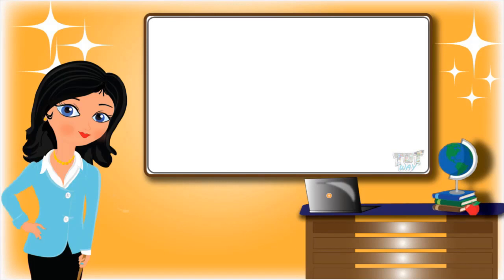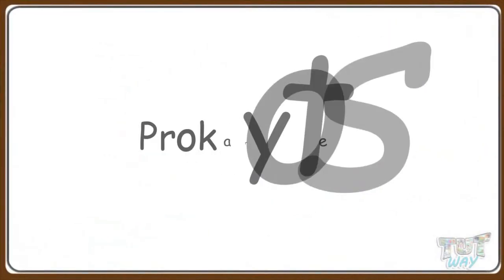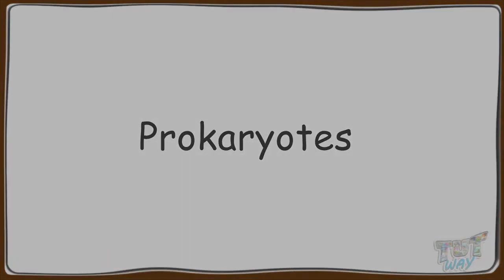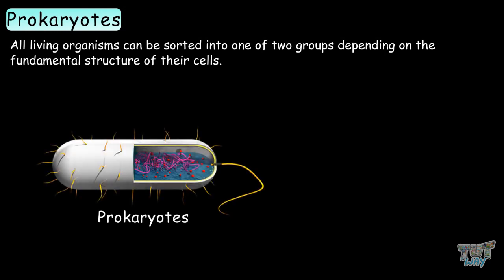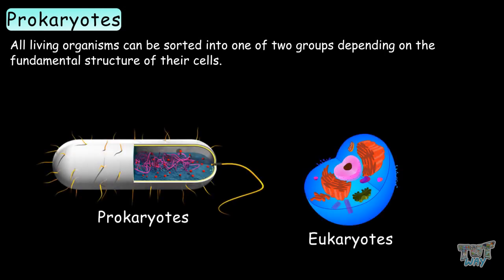Hi friends! Today we will learn about prokaryotes. All living organisms can be sorted into one of two groups depending on the fundamental structure of their cells, and these two groups are prokaryotes and eukaryotes.